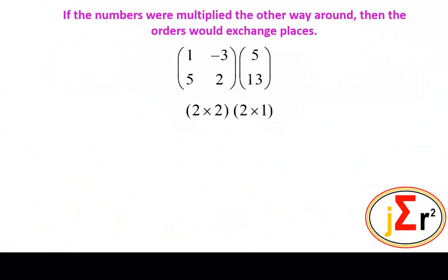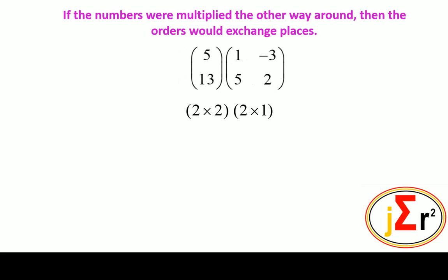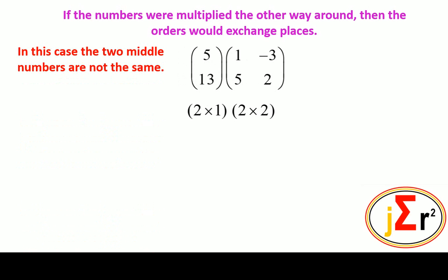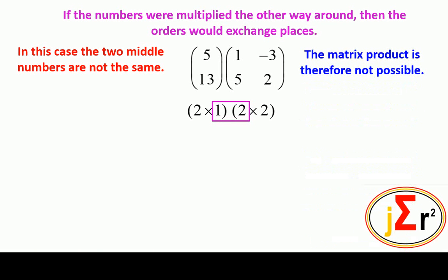If the matrices were multiplied the other way around, then the orders would also change places, because the way we multiply the matrices is the way we arrange the orders. When we change the matrices around, the orders have to be changed around too. In this case, the two middle numbers are not the same, and because they are not the same, the matrix product is therefore not possible.